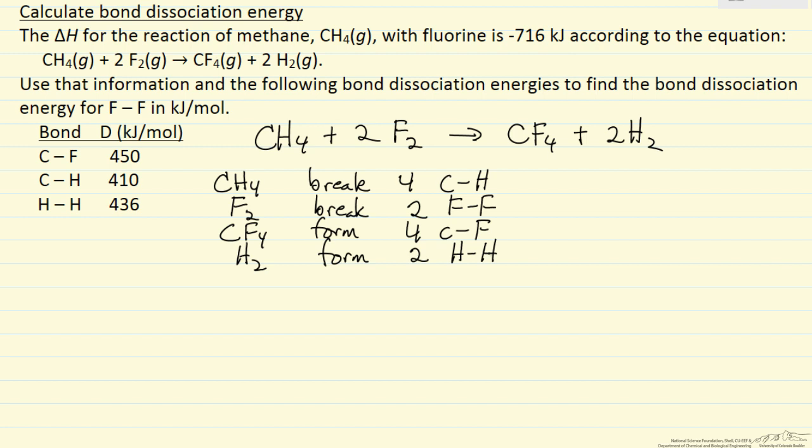And so this means we can look at the energies. To break a CH bond is 410, so we have to put in that much energy, so that's 4 times 410. To break a fluorine-fluorine we don't know, let's call that 2X. X is the bond dissociation energy for fluorine.